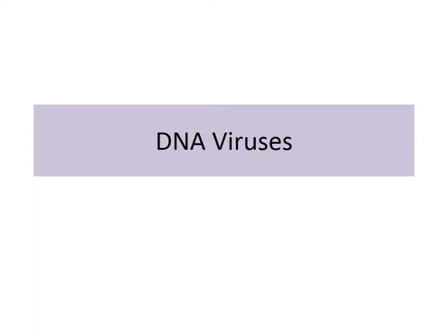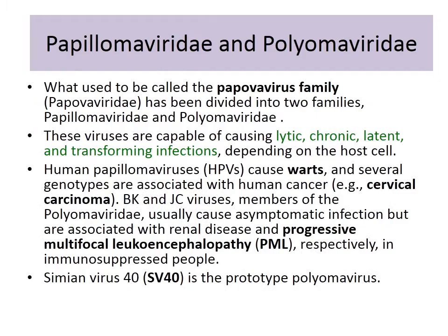Coming back to the basics: HPV is a DNA virus, and DNA viruses can be split into two larger families. The one we've been discussing is called Papillomaviridae, and the other is Polyomaviridae. There was a time we lumped them together as Papovavirus, but recently we've split them up. This kind of splitting may take place as we get to know these viruses in more and more detail.